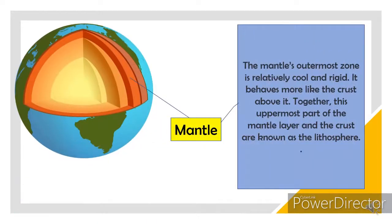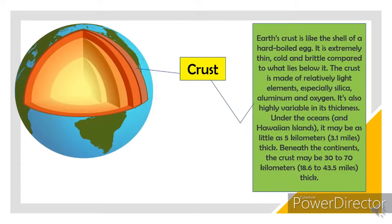The mantle's outermost zone is relatively cool and rigid — it behaves more like the crust above it. Together, this uppermost part of the mantle and the crust are known as the lithosphere. Earth's crust is like the shell of a hard-boiled egg: extremely thin, cold, and brittle compared to what lies below it. The crust is made of relatively light elements, especially silica, aluminum, and oxygen.